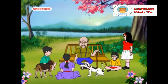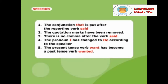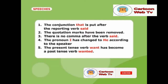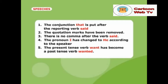While changing Ram's statement into indirect speech, the following changes are made. Number one, the conjunction that is put after the reporting verb said. Number two, the quotation marks have been removed. Number three, there is no comma after the verb said. Number four, the pronoun I has changed to he according to the speaker.